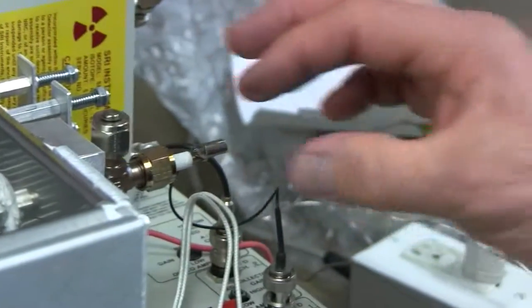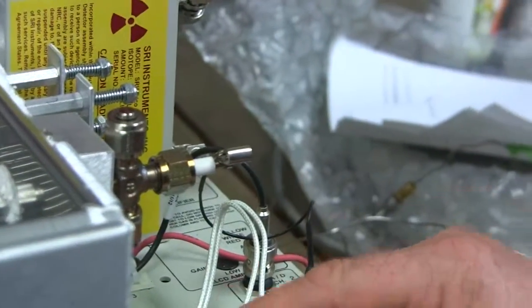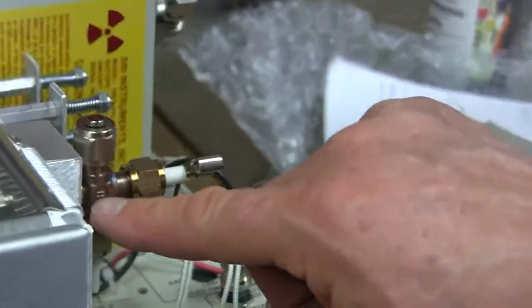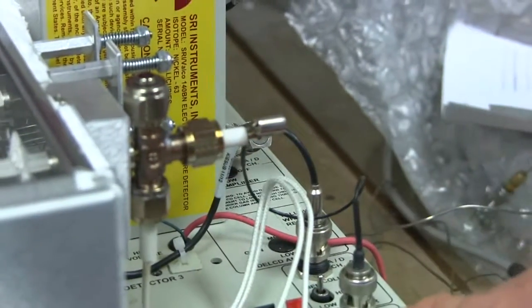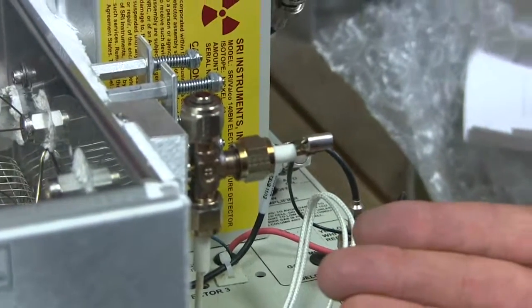This detector here is the flame ionization detector. This detector has a tiny little hydrogen flame right in the middle of this fitting and ionizes the sample by the heat of the flame.